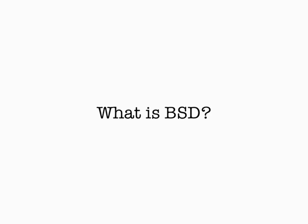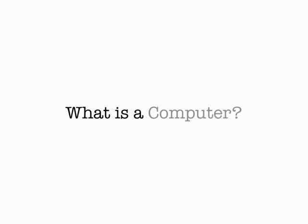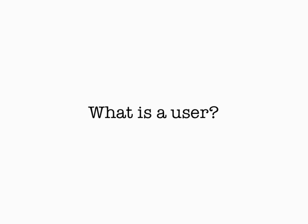BSD is tied. What is BSD? Well, I think most of us know BSD is a derivative of Unix. What is Unix? Unix is an operating system. What is an operating system? It runs computers — but what's a computer? It helps you to go fast. What's the user? A user is typically a biped that stands upright, sort of like me.